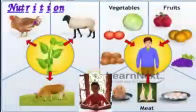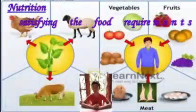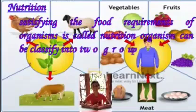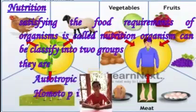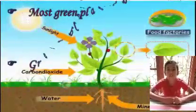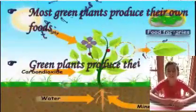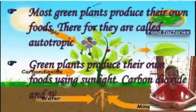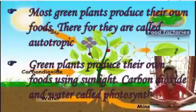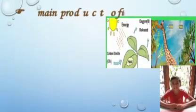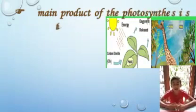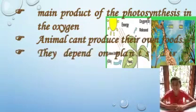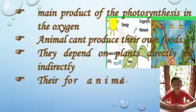Nutrition — satisfying the food requirements of organisms is called nutrition. Organisms can be classified into two groups: autotrophic and heterotrophic. Most green plants produce their own food using sunlight, carbon dioxide, and water — this process is called photosynthesis. The main product of photosynthesis is oxygen. Animals cannot produce their own food; they depend on plants directly or indirectly. Therefore, animals are considered heterotrophic.